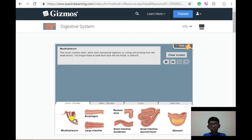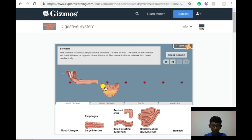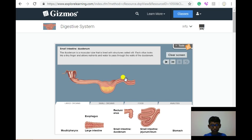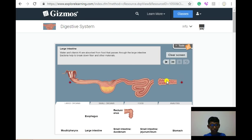So, first is the mouth, then the esophagus, then the stomach, then the small intestine, again the small intestine, now a large intestine and finally the rectum.